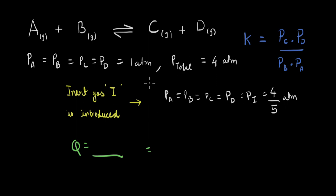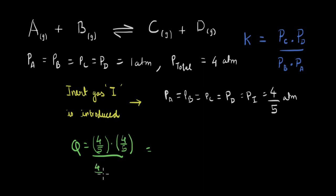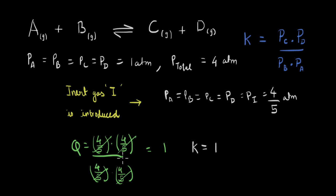The reaction quotient will be the partial pressure of C (4/5) times the partial pressure of D (4/5), divided by the partial pressures of A and B (both 4/5). Cancelling everything out, the reaction quotient is 1. Just like before, since the initial pressure of all gases was 1 atm, the value of K is also 1. The reaction quotient equals the equilibrium constant, so the equilibrium will not shift.